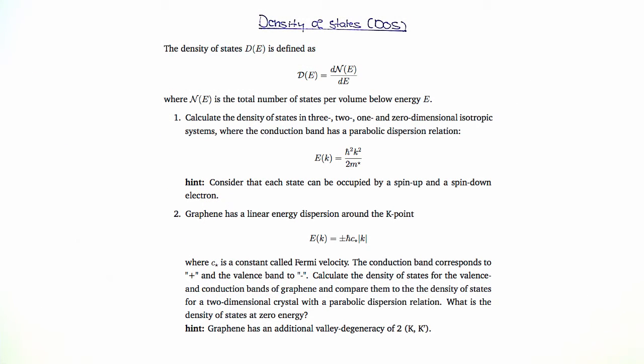In this exercise, we are going to calculate the density of states for isotropic systems of different dimensions. For part number one, we are going to calculate it using the free electron dispersion. In part number two, we are going to use the dispersion in graphene around the k-point.